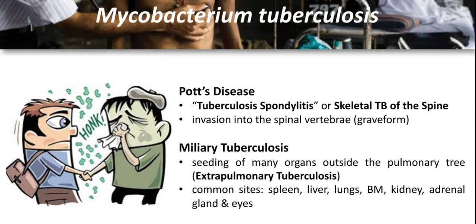Pott's disease is the most dangerous form of musculoskeletal tuberculosis because it can cause bone destruction, deformity, and paraplegia. Pott's disease most commonly involves the thoracic and lumbosacral spine. Miliary tuberculosis, on the other hand, is a potentially fatal form of disseminated disease due to hematogenous spread of tubercle bacilli to the lungs and other organs. It results in the formation of millet seed-sized lesions, usually 1 to 2 millimeters, of tuberculous foci.